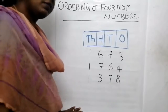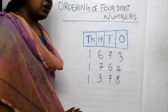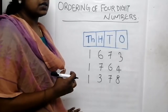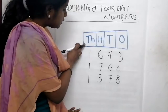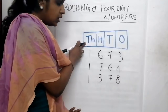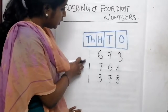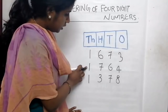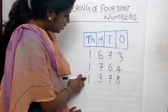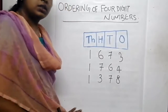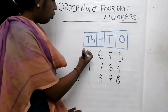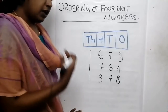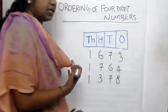First, we have to check the numbers in the thousandth place. Where is the thousandth place? Here. What are the numbers in the thousandth place? Here it is 1, here it is also 1, and here it is also 1. All these numbers are same, so what will we do?